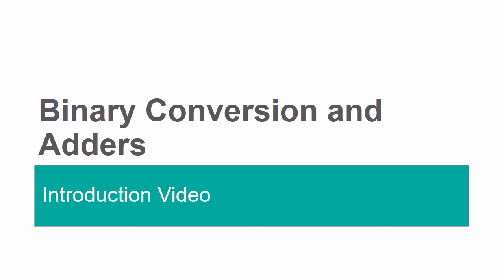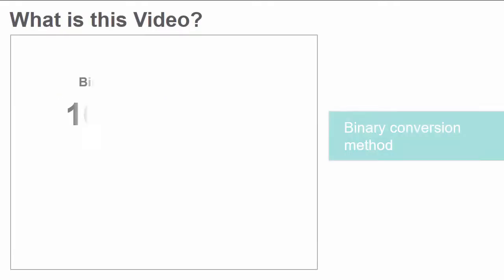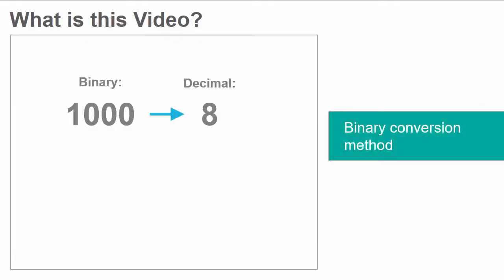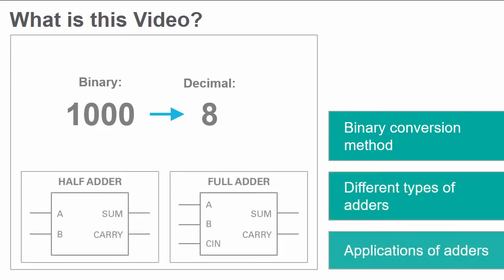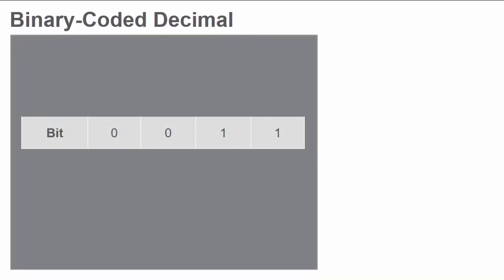Introduction to Lab 4: Binary Conversions and Adders. In this video, we'll discuss the binary conversion method used in digital electronics as well as the uses and applications of the different types of adders. In large circuits where it is impractical to create truth tables, we convert binary numbers to a binary coded decimal, or BCD.